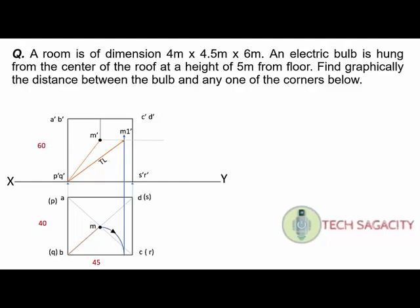This is the true length: Q' to M1'. Measure to scale and get the answer. Convert using the scale — for example, 52 mm on the scale gives a true length of 5.2 meters. The answer is 5.2 meters.